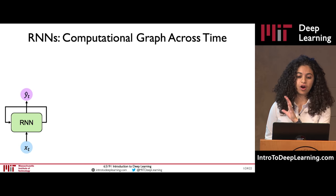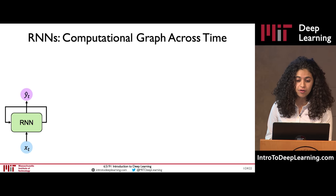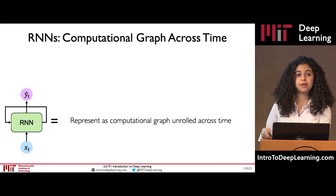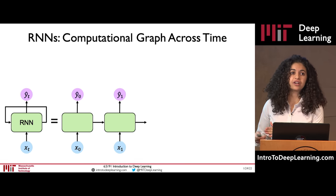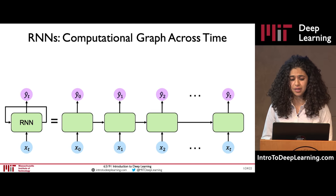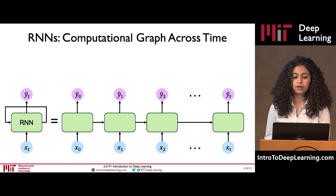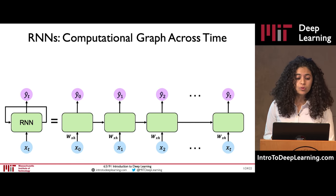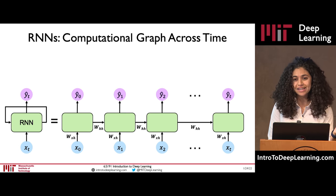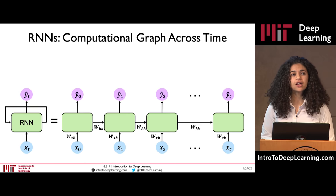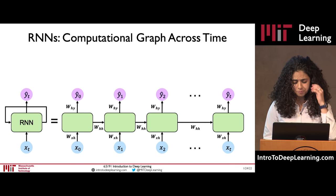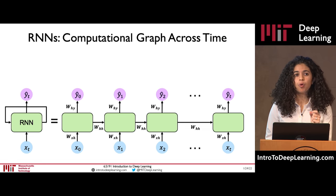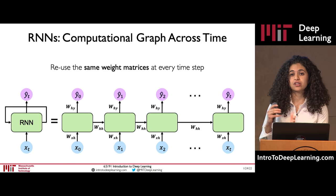RNNs are depicted as having loops that feed back on themselves, but we can also represent this loop as being unrolled across time — starting from the first time step and unrolling across time from t equals 0 to time step t. In this diagram we can make the weight matrices explicit: the weight matrices applied to the input, the weight matrices that relate the prior hidden state to the current hidden state, and the weight matrices that generate predictions at individual time steps. The key point is that these weight matrices are reused across all individual time steps.